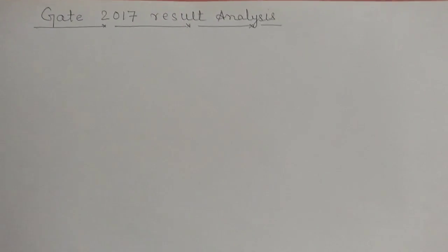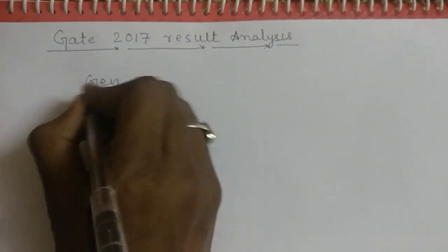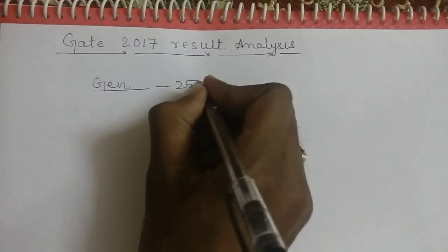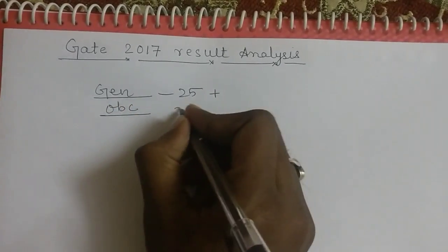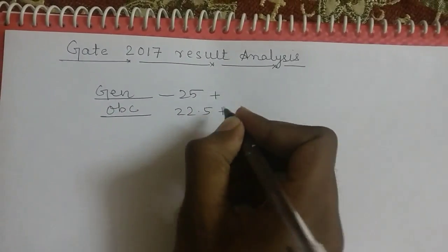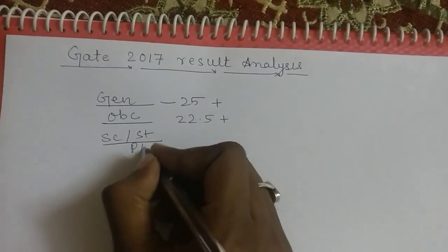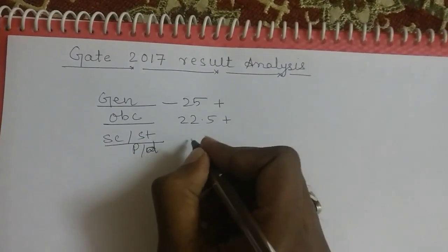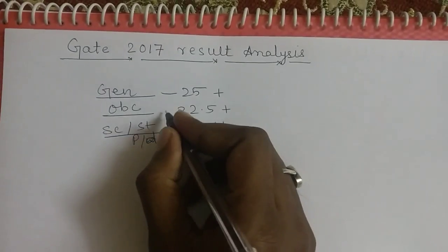But two days before, GATE launched its result on their website, and this year, like the previous years, the cutoff was also 25 marks for general candidate, whereas for OBC candidates, it was 22.5 marks, for SC/ST and PWD means physically disabled candidates, it was 16.6 marks.